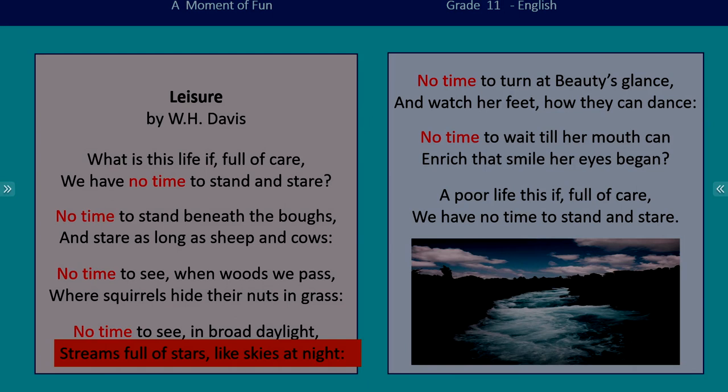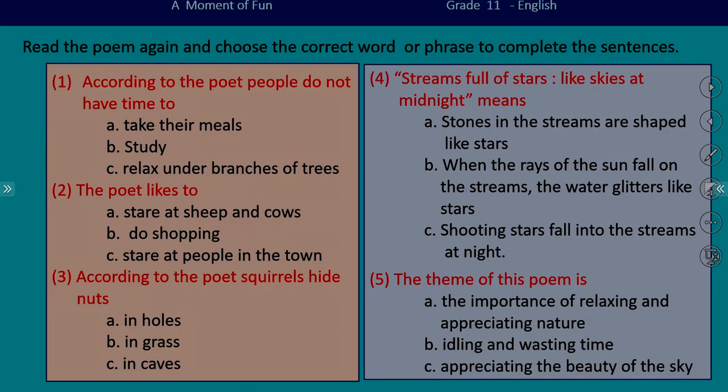Now we have the same poem and an activity for you to do. You are going to choose the correct word or phrase to complete these sentences. Shall we do the first one together? According to the poet, people do not have time to — we have three options: take their meals, study, or relax under branches of trees. Do we find anything regarding meals or study in the poem? No.